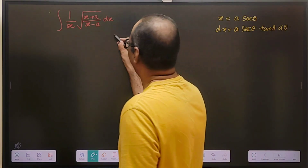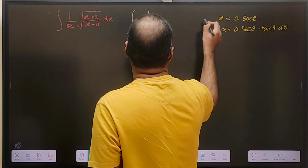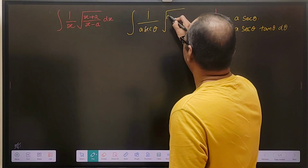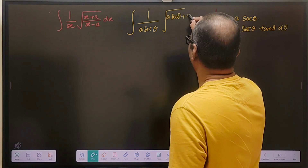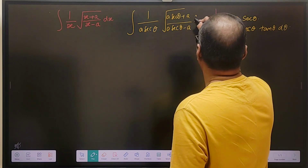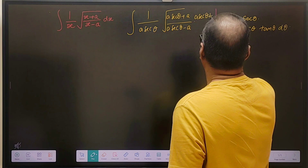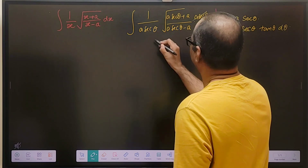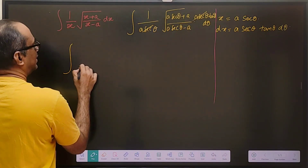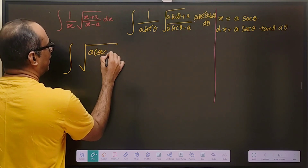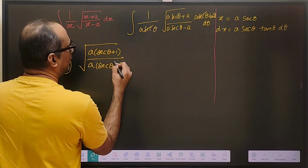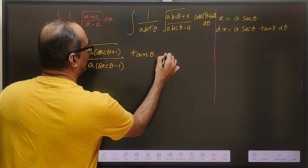Let us go ahead and substitute. We have 1 by x as 1 by (a secant theta), and the square root of (a secant theta plus a) divided by (a secant theta minus a), multiplied with dx which is a secant theta tan theta d theta. We can cancel a secant theta with a secant theta. Then this becomes the integral of square root of (a·secant theta plus 1) divided by (a·secant theta minus 1), multiplied with tan theta d theta.